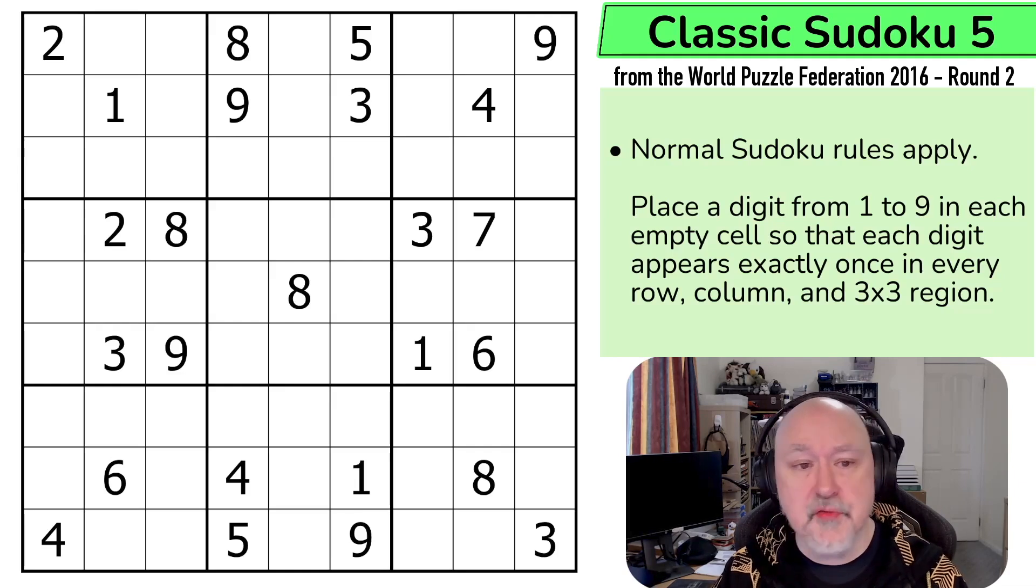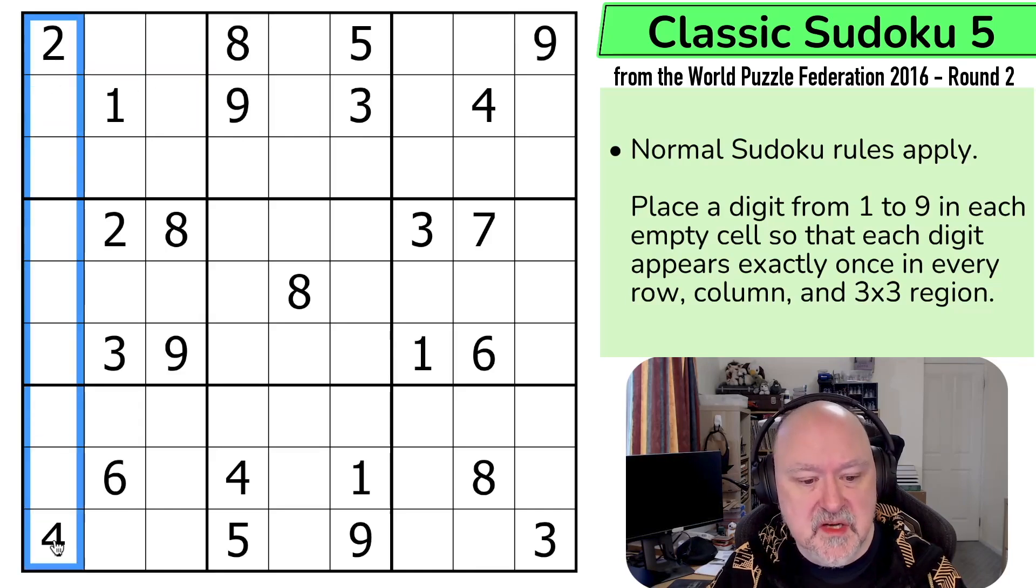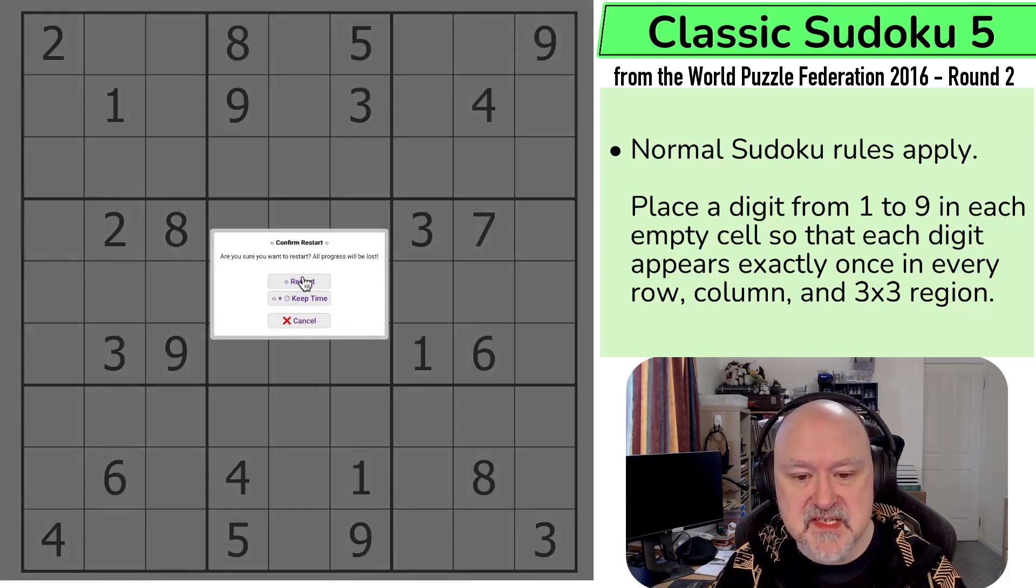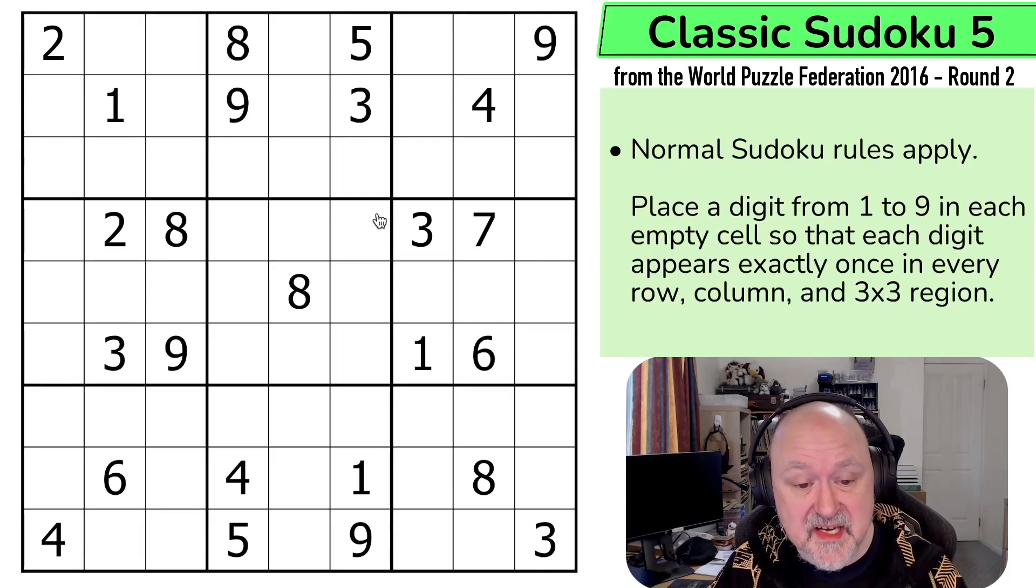That's it. I'm going to go through the rules and then we're going to give it a try. So what are the rules? Normal Sudoku rules, because this is a classic Sudoku. So in every box, in every row, and in every column, the digits 1 to 9 must be placed without repetition. That's it. I'm going to restart the puzzle to restart my timer. I'm not that worried about time. That's it. So let's give this a shot.